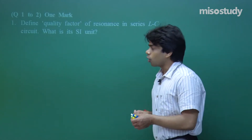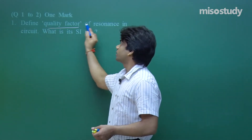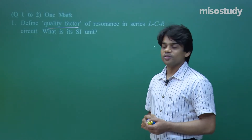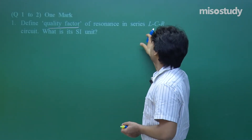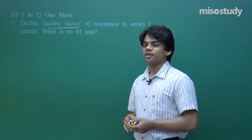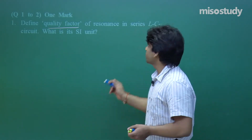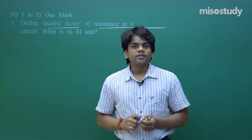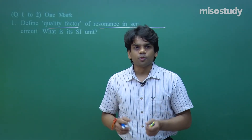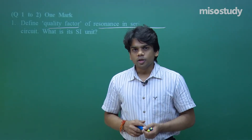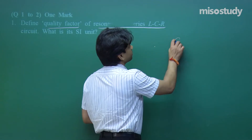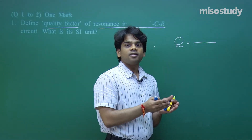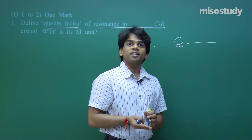The first question: define quality factor, which we have done already in our regular theory class. We have already understood what is the quality factor of resonance in a series LCR circuit and what is its SI unit. The Q factor or quality factor is the ratio of voltage drop across the inductor with respect to the voltage drop across the resistor.